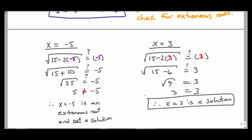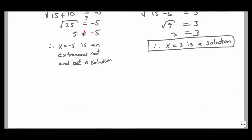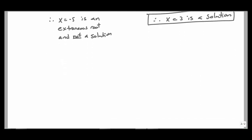So these are the types of problems we're going to look at. Our original problem only had one square root sign — what you want to do is isolate the square root, and once isolated, square both sides. We always must check for extraneous roots.